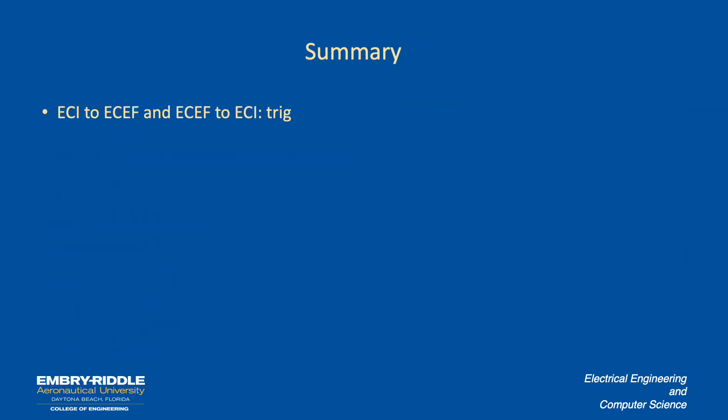So in summary, going from earth-centered inertial to earth-centered earth-fixed and back is just a matter of using trig with that rotation matrix C we had there with the cosines in it, sines and cosines. But to go from lat-long height to ECEF, there's a direct method of going from lat-long height to earth-centered earth-fixed, but we had to use iteration to go from earth-centered earth-fixed to lat-long height.